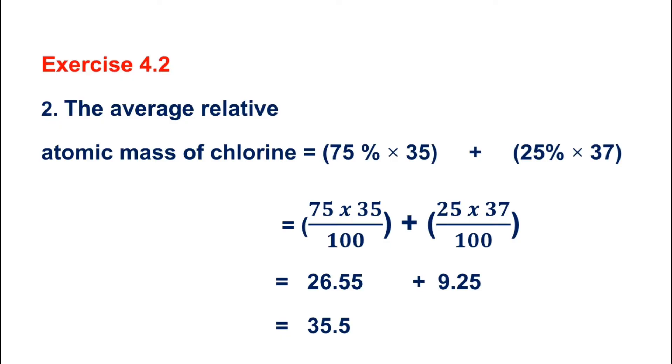The average related atomic mass is calculated as: (first isotope relative atomic mass × relative abundance) plus (second isotope relative atomic mass × relative abundance).